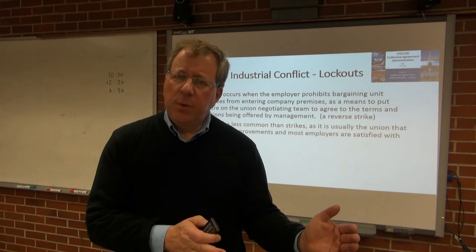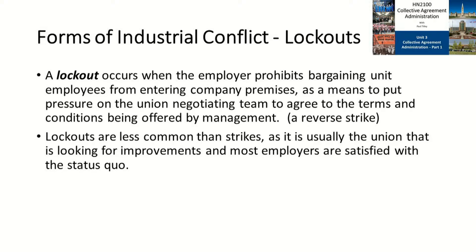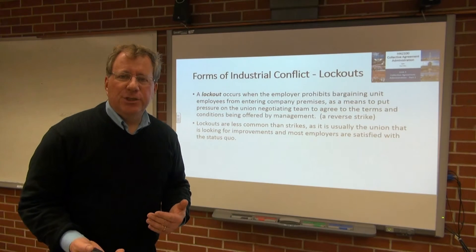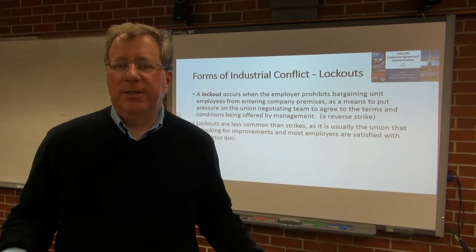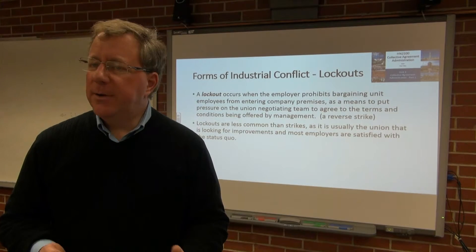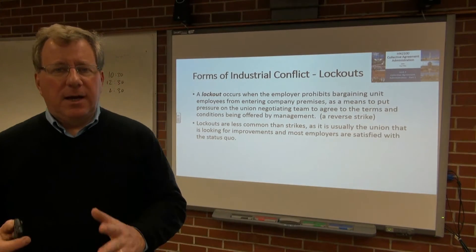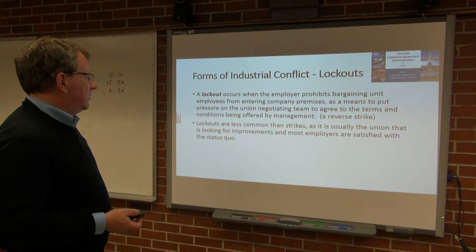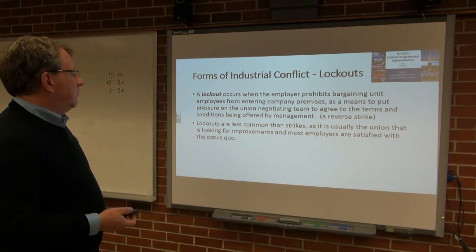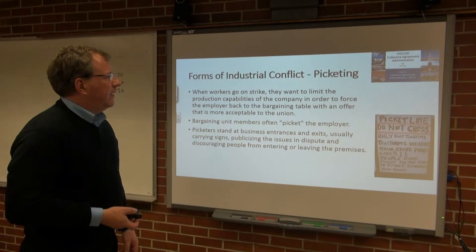Employers have an equivalent to a strike called a lockout. A lockout occurs when the employer prohibits bargaining unit employees from entering the company premises as a means to put pressure on the union to agree to the terms and conditions being offered by management — sort of a reverse strike. The same terms and conditions that apply to strikes apply to lockouts. During the term of the agreement, you can't lock workers out, but there is a time when you can do it during negotiations. Lockouts are less common than strikes, as most employers are satisfied with the status quo.